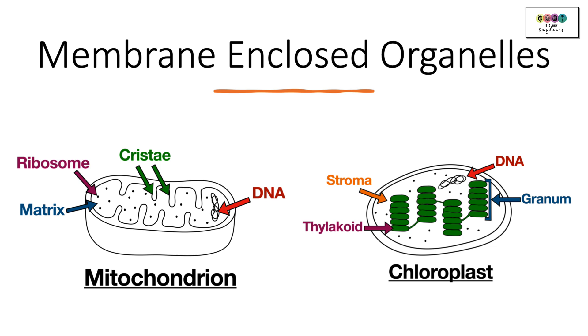We know that the mitochondrion and the chloroplast are membrane-enclosed organelles. So they have a membrane. In fact they have a double membrane around each of them. We find mitochondria in plant cells and animal cells. But you only find chloroplasts in plant cells. So that's very important.